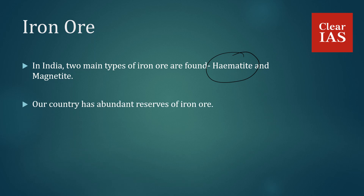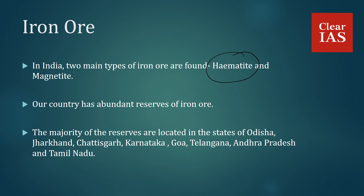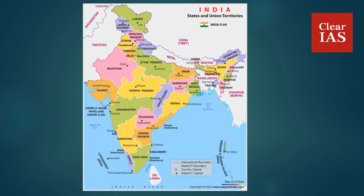Our country has abundant reserves of iron ore. The majority of the reserves are located in the states of Odisha, Jharkhand, Chhattisgarh, Karnataka, Goa, Telangana, Andhra Pradesh and Tamil Nadu. The important iron ore reserves in our country are located across these states.